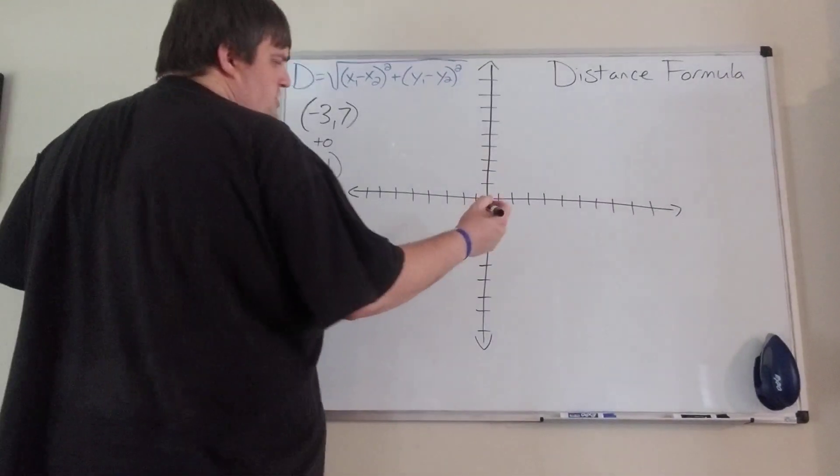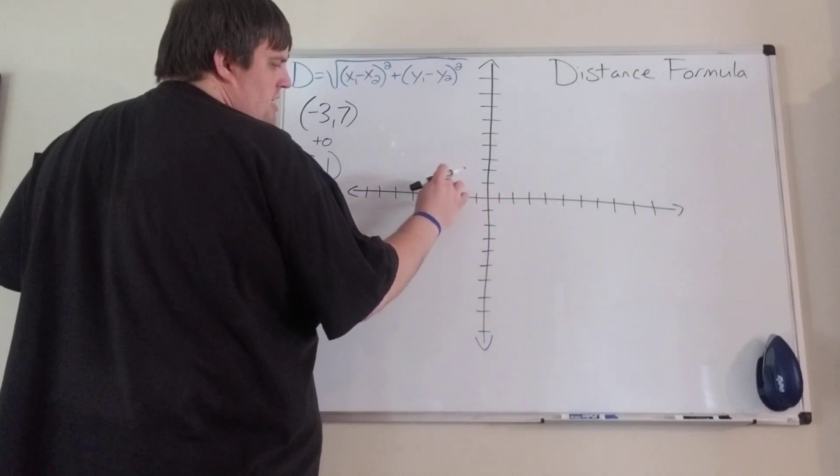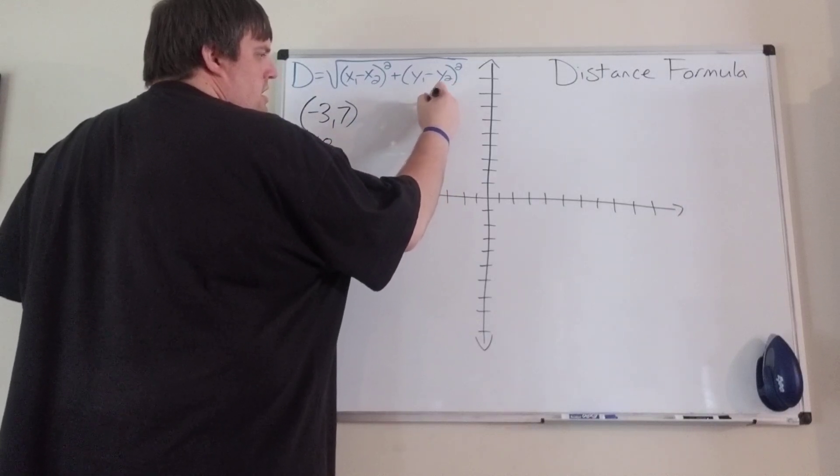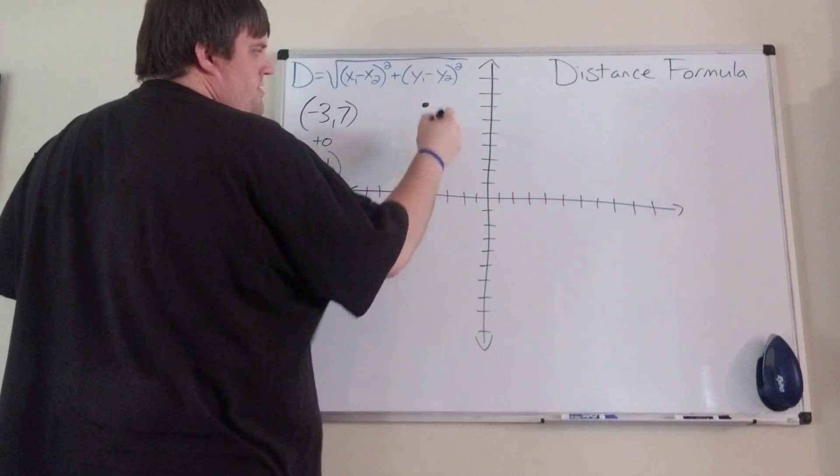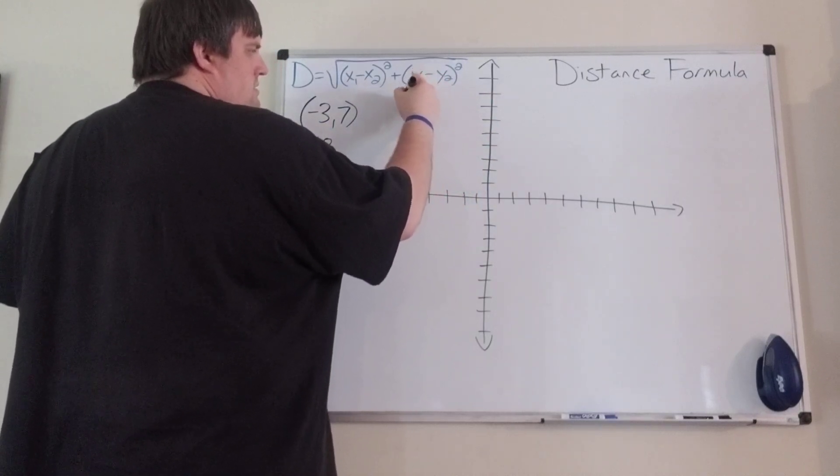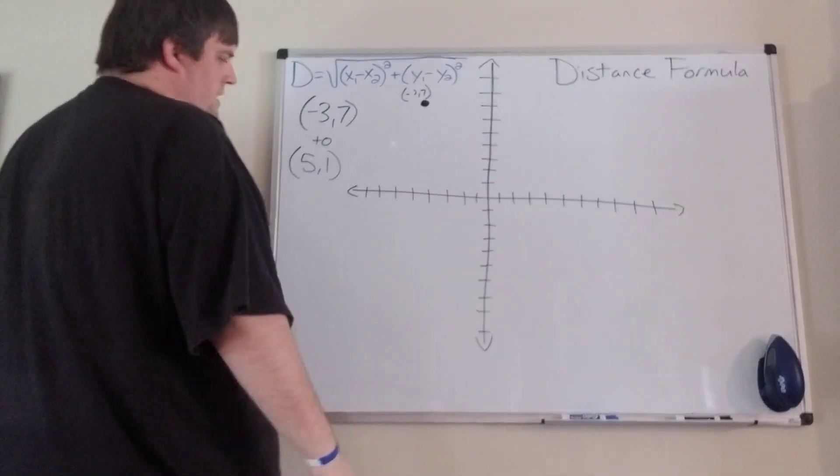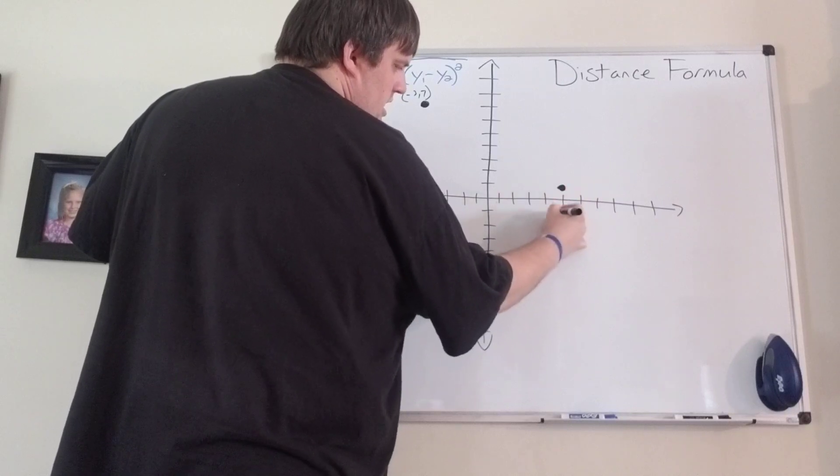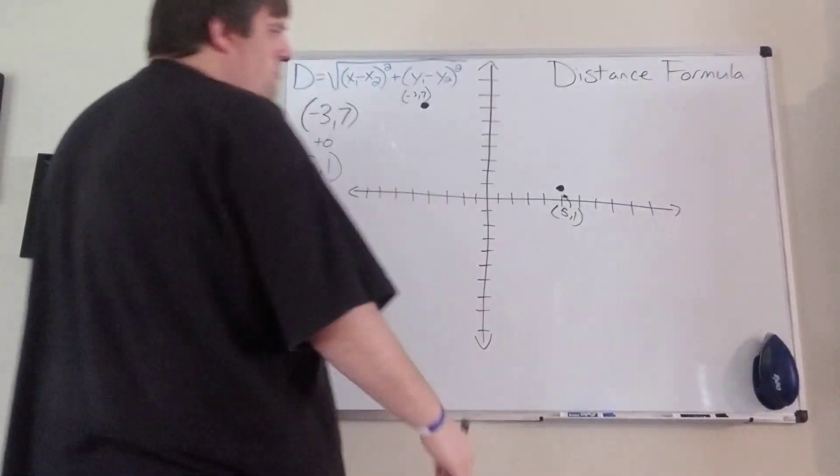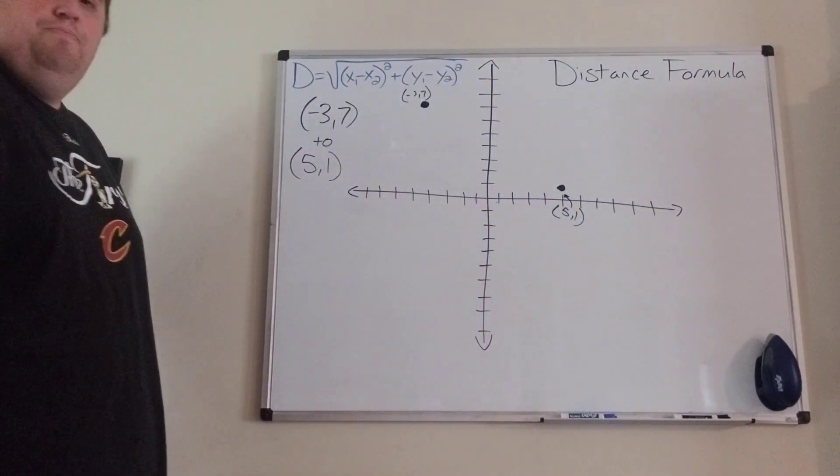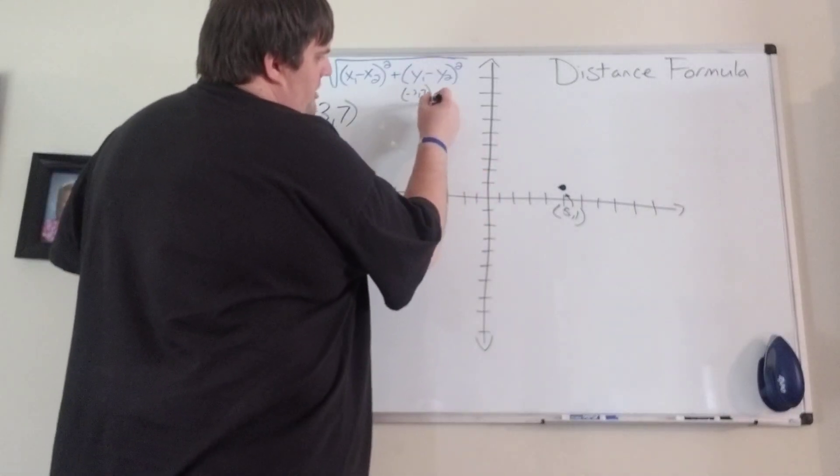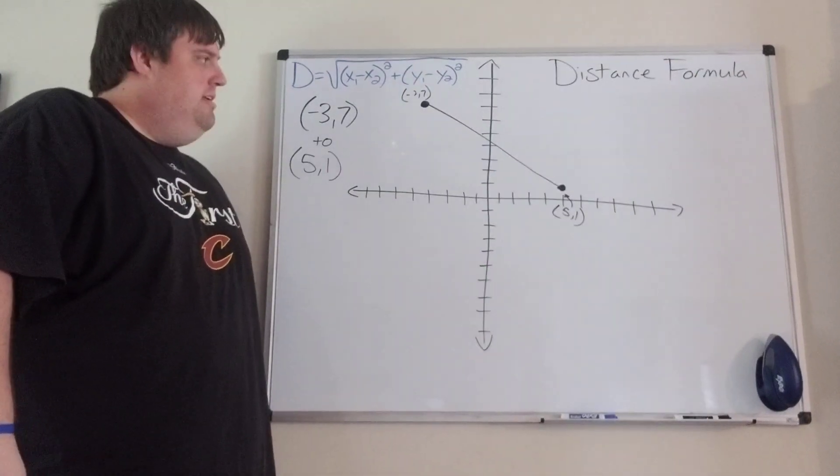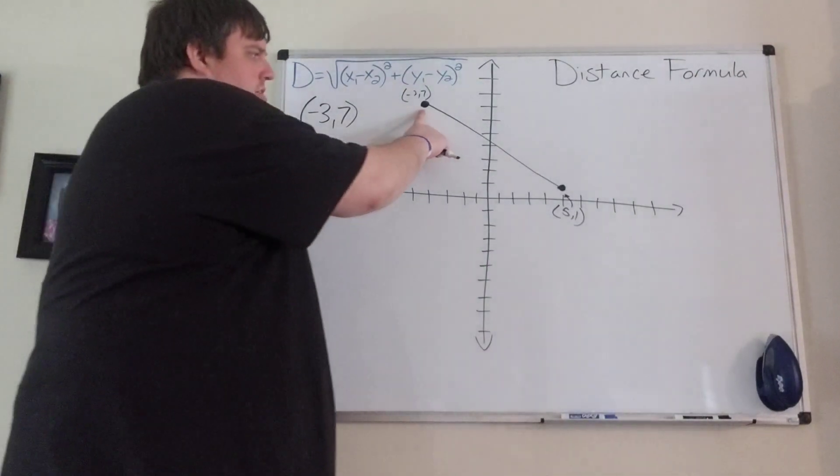Just to give you kind of a visual representation here, negative three, seven is somewhere here. One, two, three, four, five, six, seven. Yep. So this is negative three, seven. And then five, one is over here. One, two, three, four, five, one is right there. Cool. So what I'm really looking for is how far is that line segment from here to here?